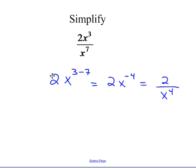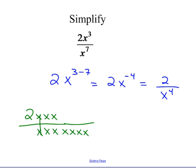Another way to think about it: 2x cubed means 2 times x times x times x on top, and x to the seventh on the bottom means seven x's. The three x's on top cancel with three from the bottom, leaving four x's on the bottom — giving the same answer: 2 divided by x to the fourth. Since 7 is bigger and is in the bottom, we end up with x's in the bottom after canceling.